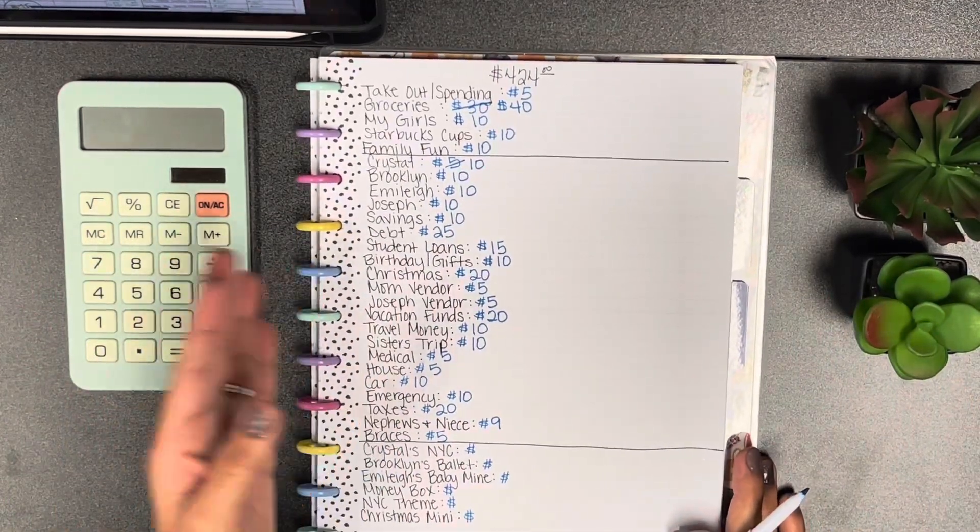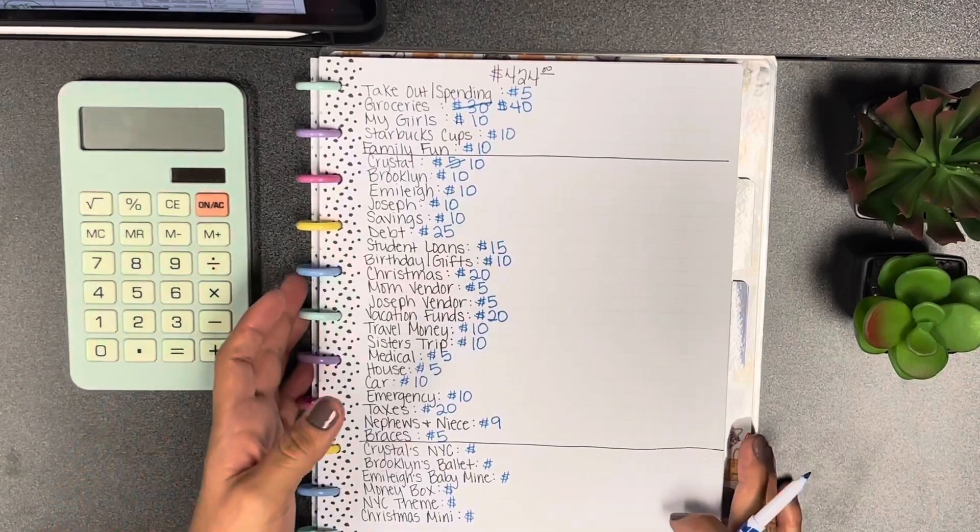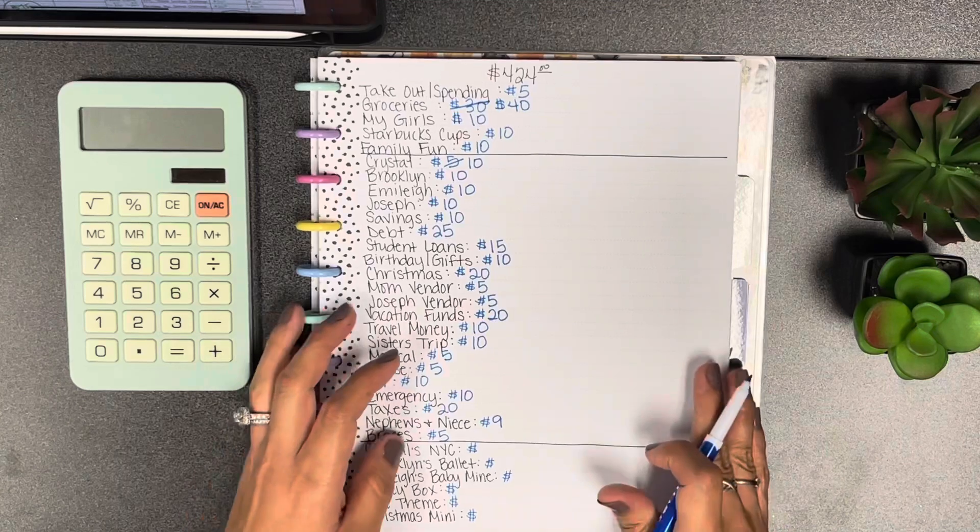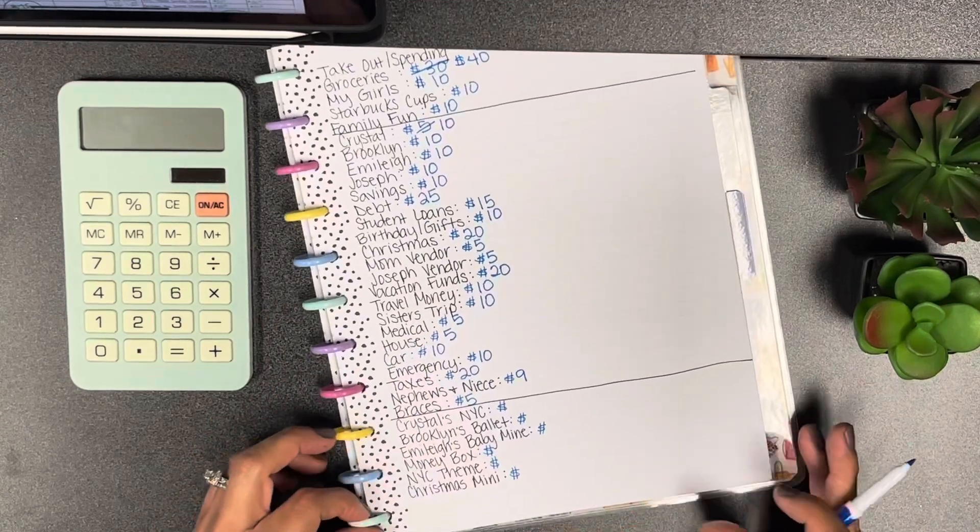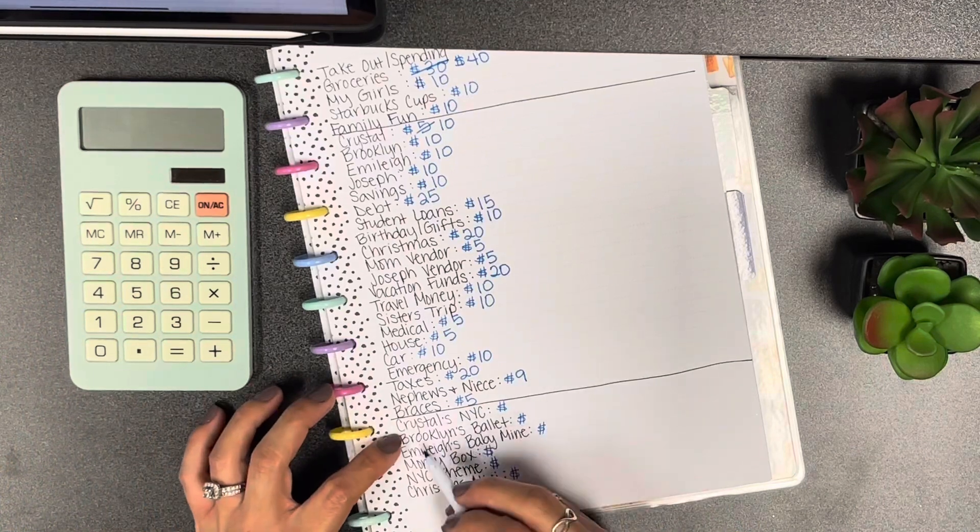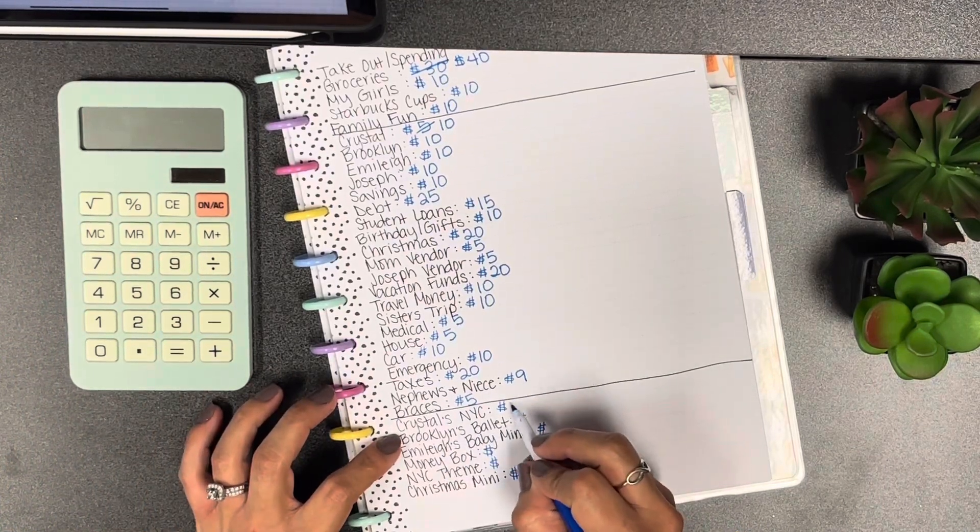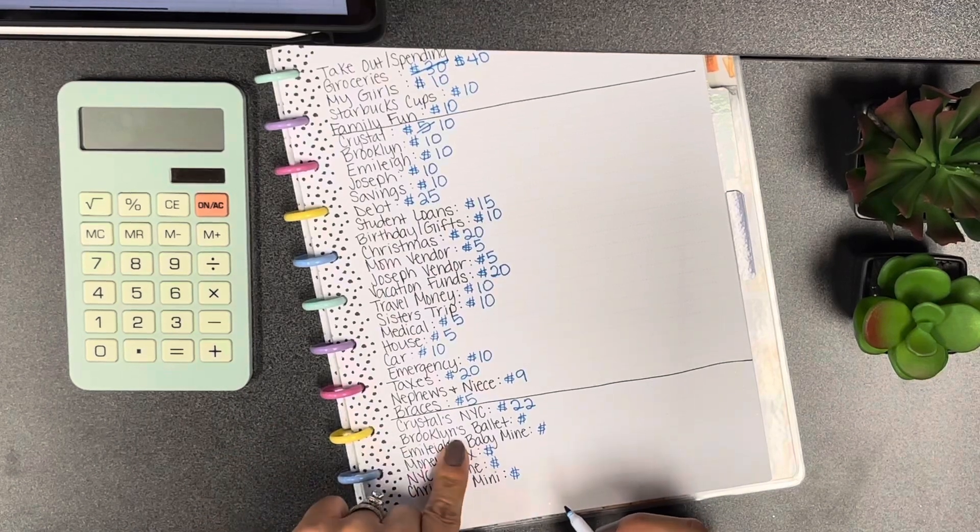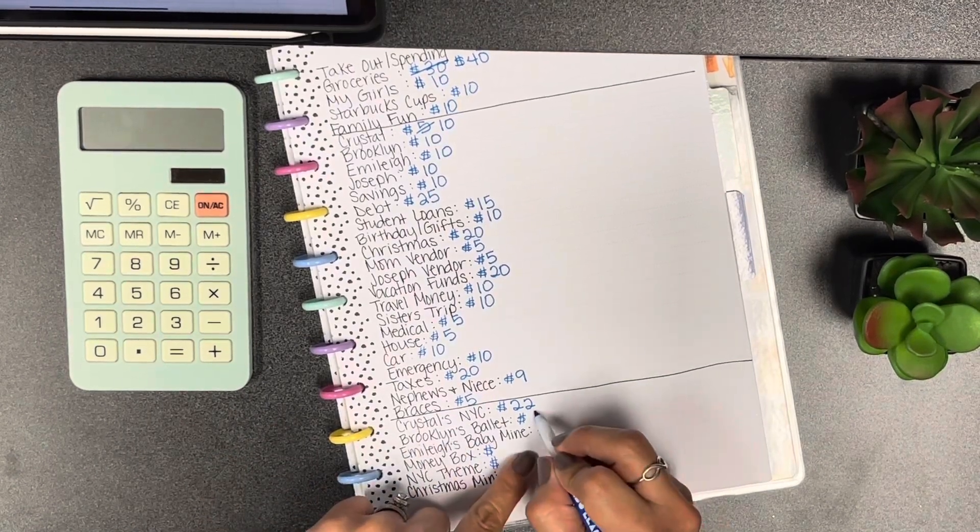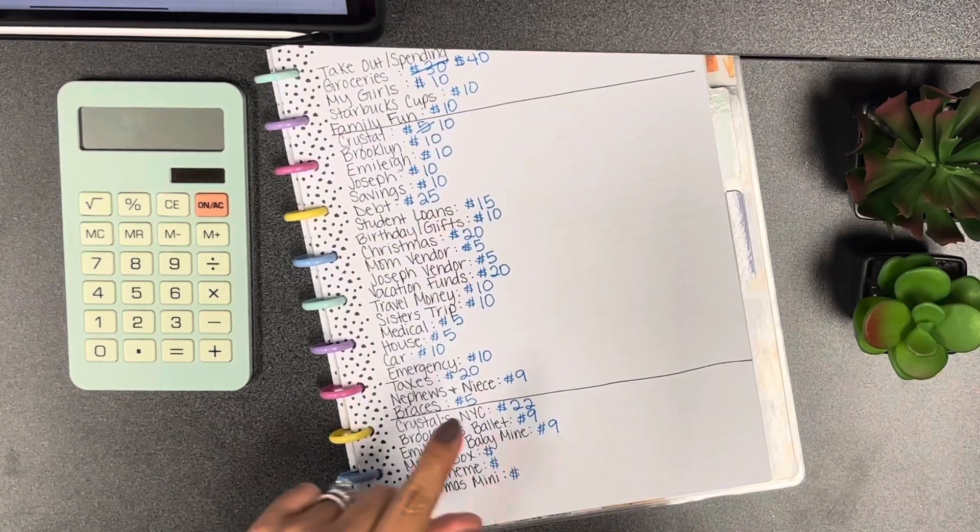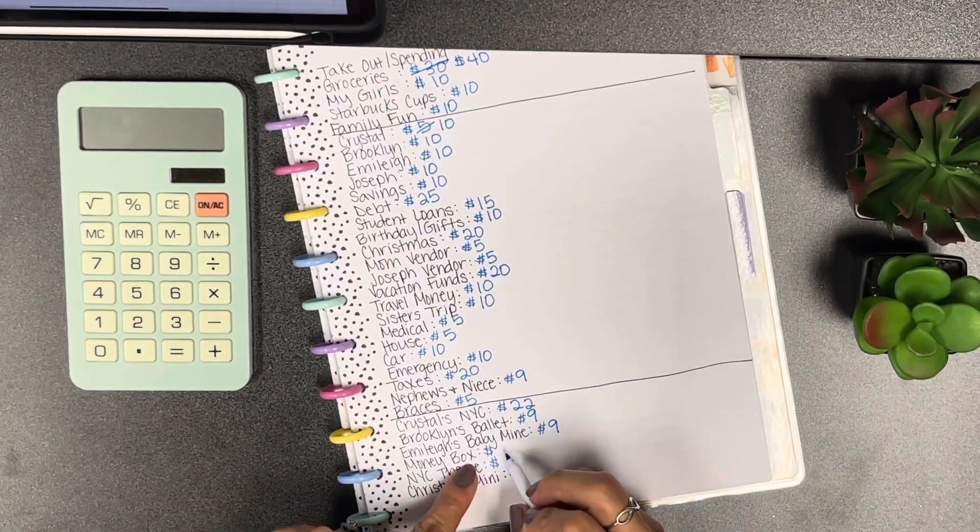My niece and my nephews and my niece 9, and braces 5. As you can tell this is a different setup. I actually moved over office spaces in our studio so I have a different desk and stuff. For the savings challenge section, my savings challenge we're gonna do 22 like we do every week.